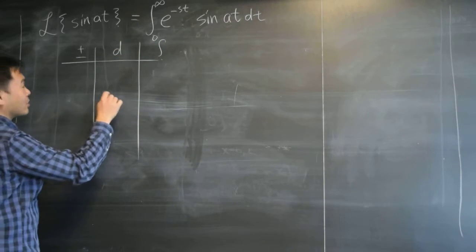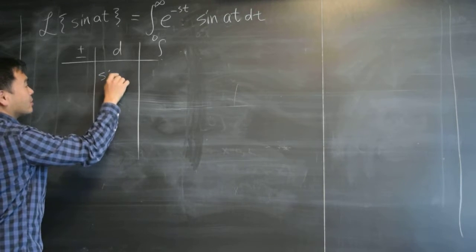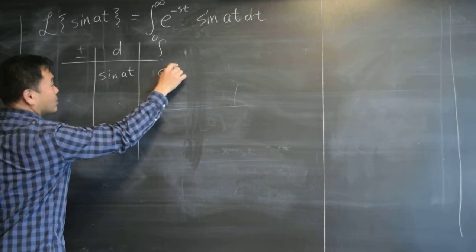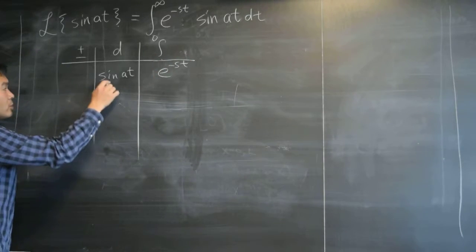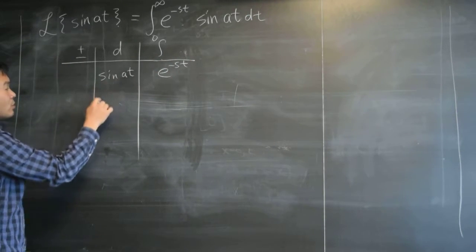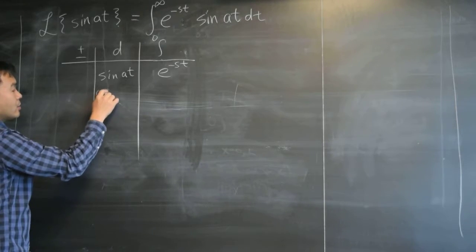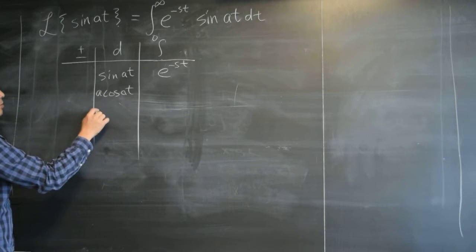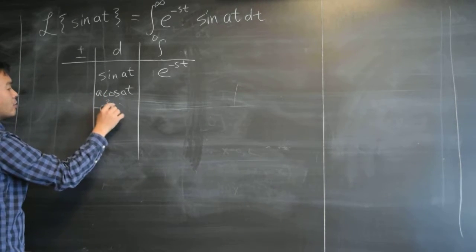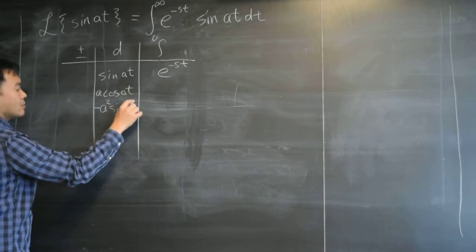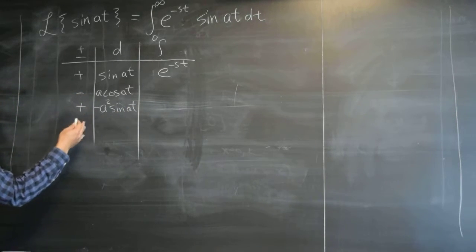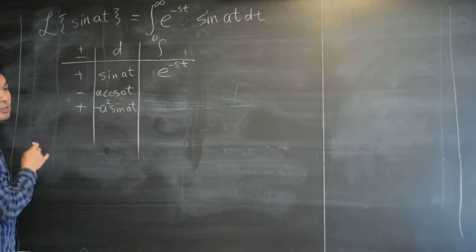That's why I want to show you this. So I put sine at here and then e to the negative st here. And you keep a as some constant. If you differentiate this, you get a cosine at. Differentiating this again, you get negative a squared sine at. Plus, minus, plus. And you want to stop when you get the same sine at again.